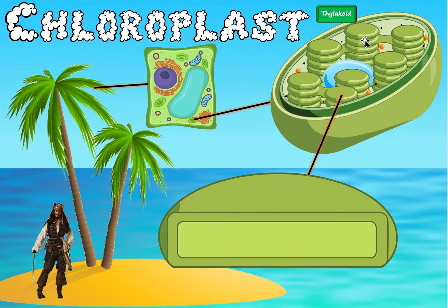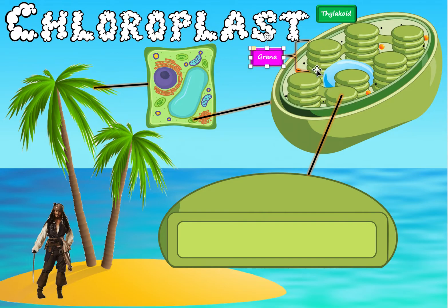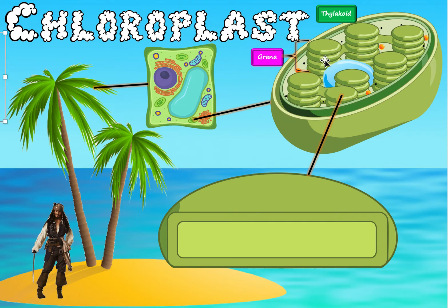Notice how the thylakoids are stacked on top of each other like pancakes. When they are stacked like that, they form a stack called a grana. The reason they stack like this is because it improves light absorbance — it increases the surface area so that light can be absorbed from all angles: top, side, front, and back.